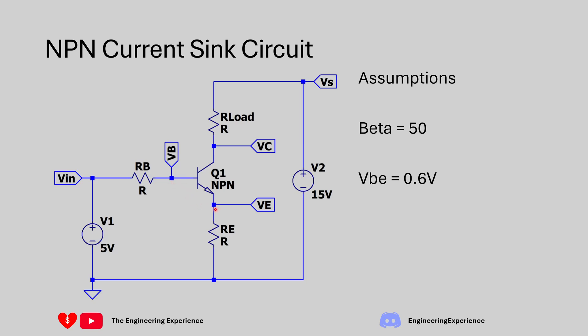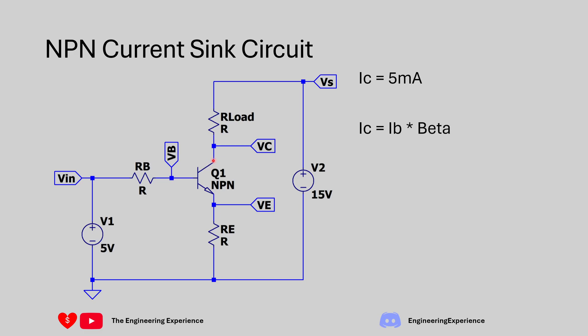With a 0.6 volt drop on VBE, we can calculate the voltage drop on RE and use it to calibrate 5 milliamps flowing through the emitter. From the question we need 5 milliamps as IC, the collector current. Since IC equals IB times beta, and beta is 50, we can calculate the minimum base current: IB equals IC divided by beta, so 5 milliamps divided by 50, giving a minimum IB of 100 microamps.